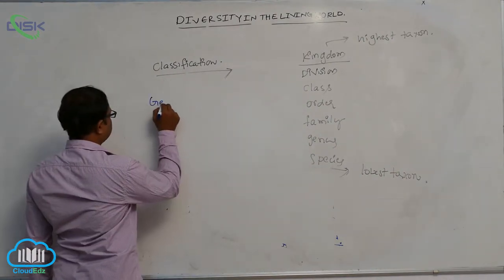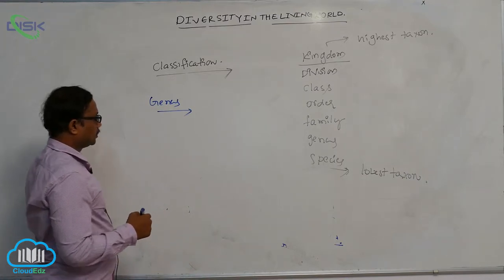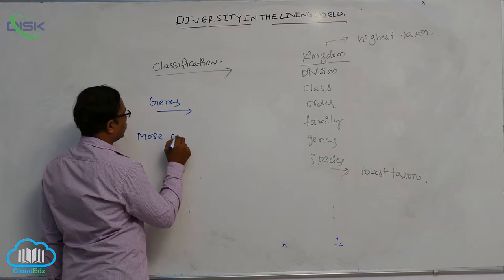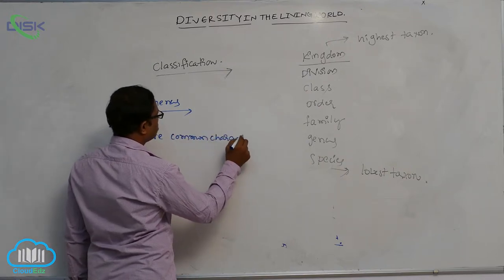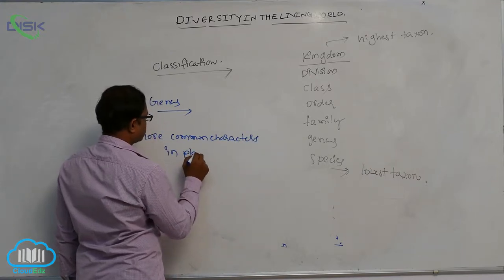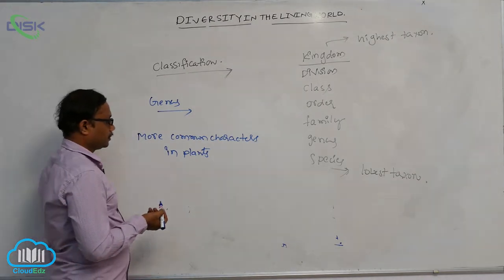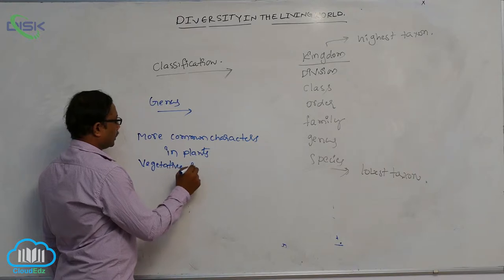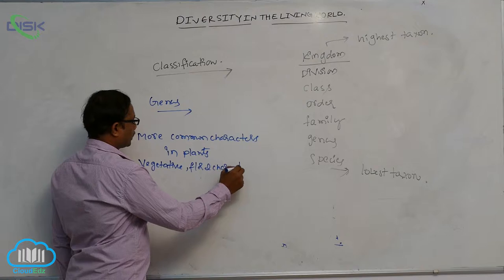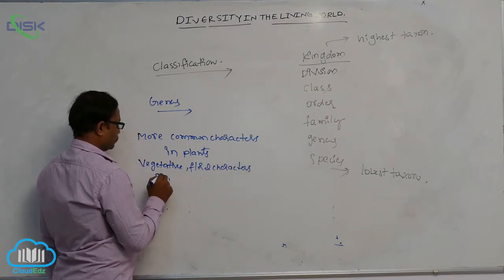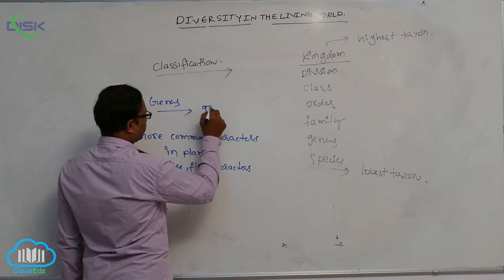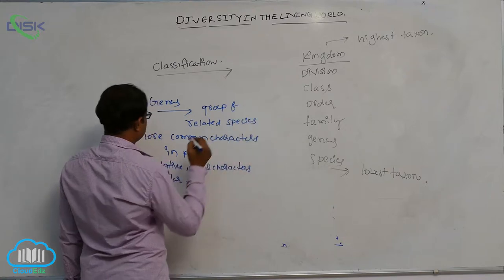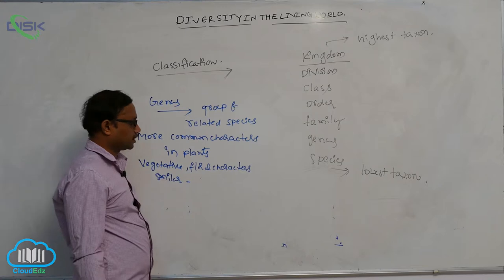After the species, genus. Genus means it is related to the species. It has more common characters. Both vegetative and floral characters are similar. Genus means a group of related species is known as the genus.